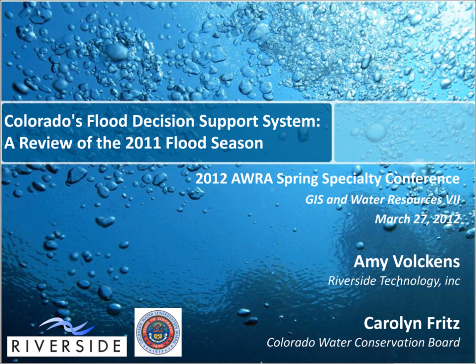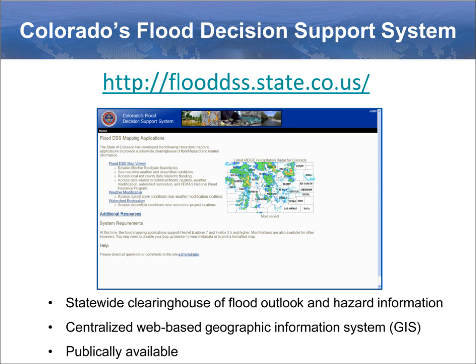The state of Colorado wanted a web-based portal for flood data that could be accessed anywhere, at any time. The state uses the system to monitor flood risks during the flood season and to administer flood programs year-round. The Flood Decision Support System brings together data from federal, state, and local agencies into one application for easy access.